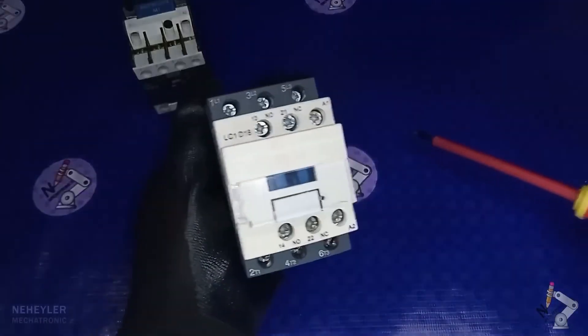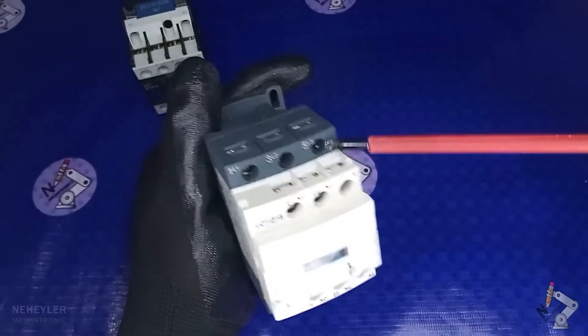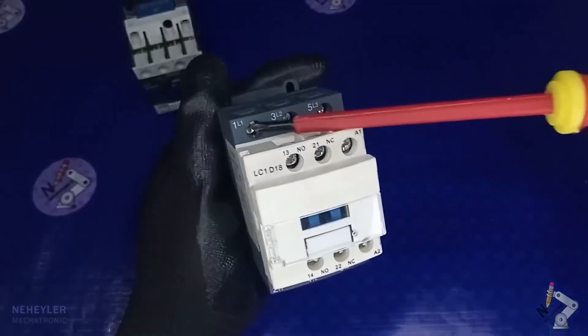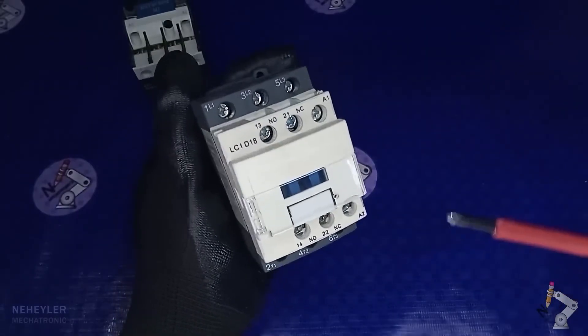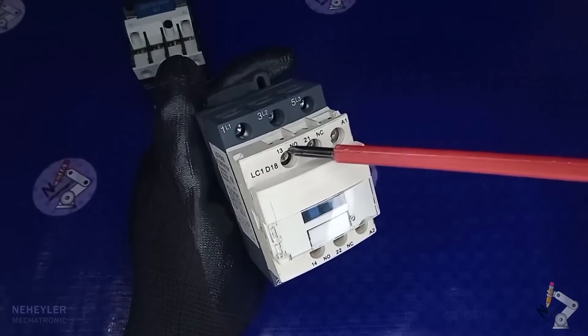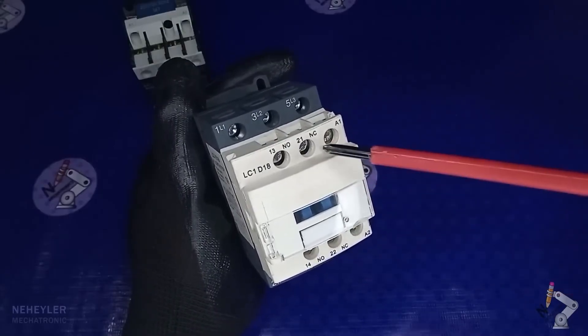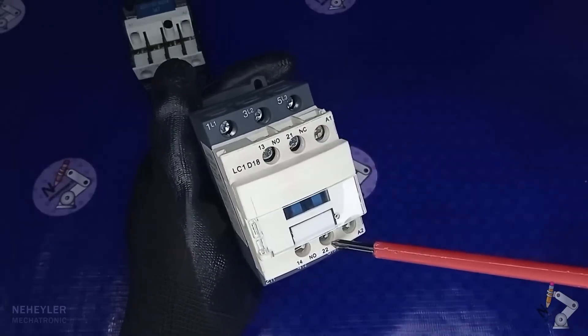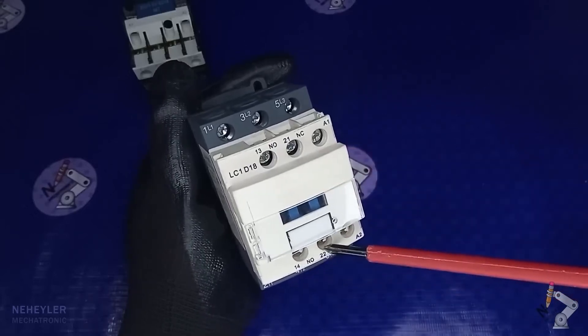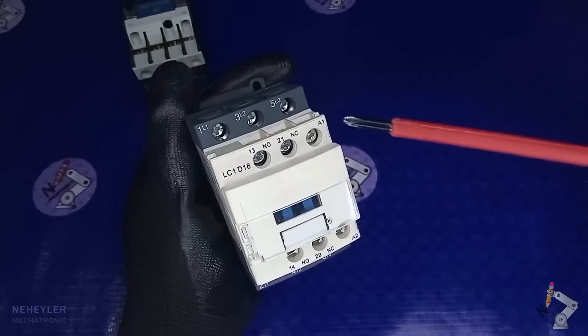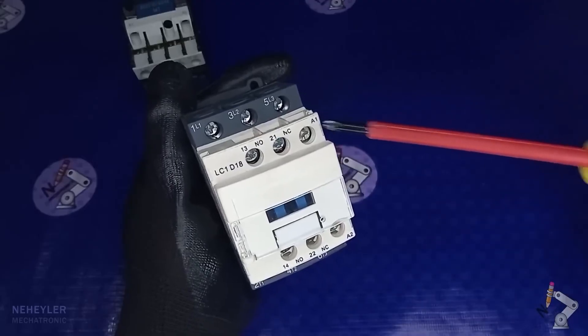This other contactor is similar. On the back we have the three main input contacts and on the bottom their respective outputs. Here we have a normally open contact and its respective output. The following is a normally closed contact. These two contacts are auxiliary contacts. The power supply for the coil is through A1 and A2.